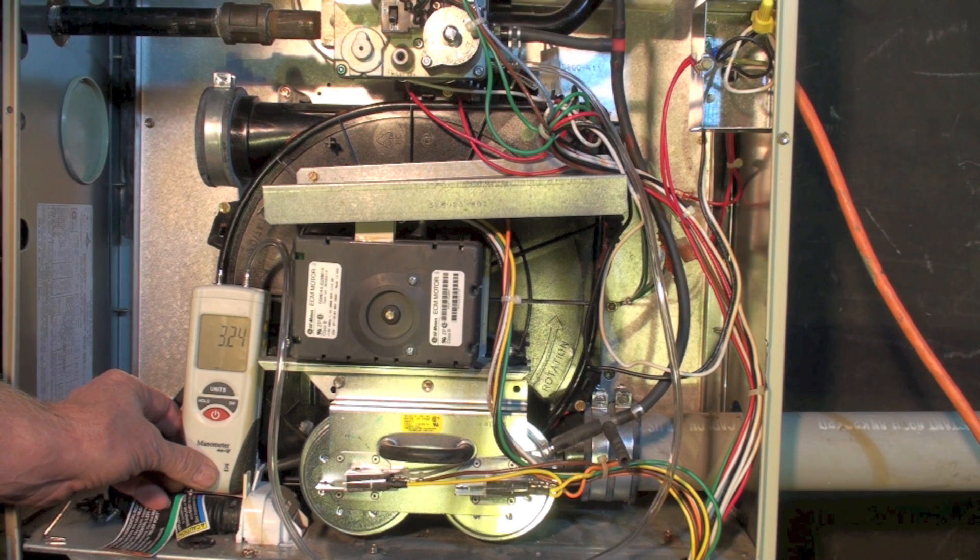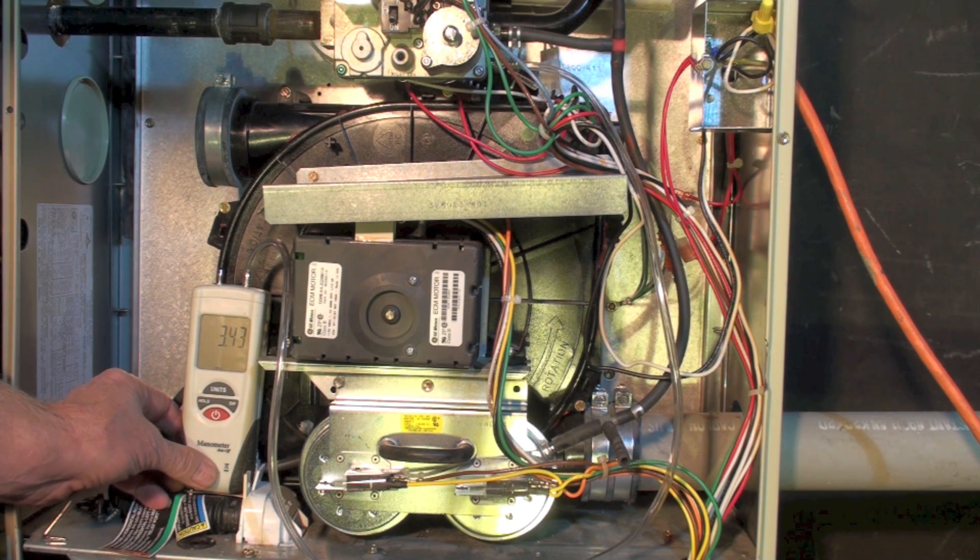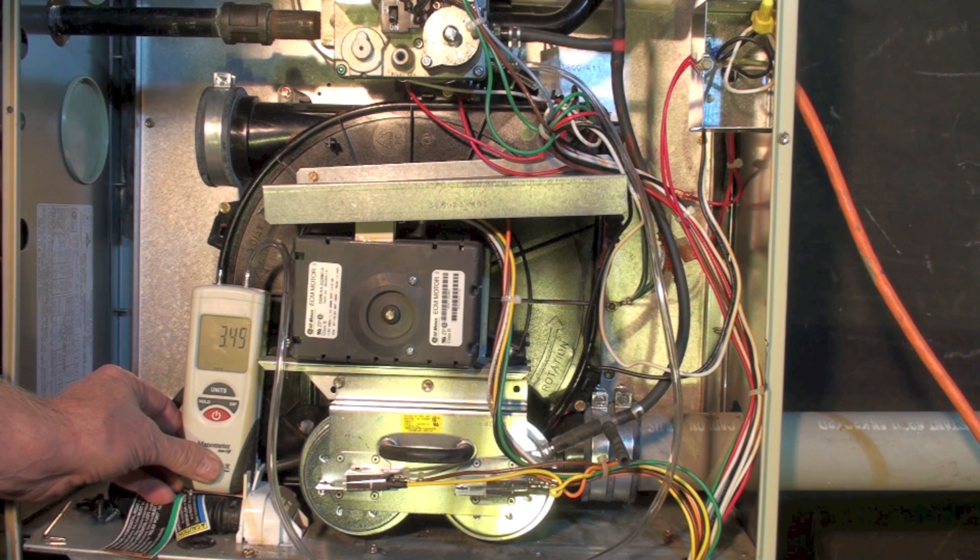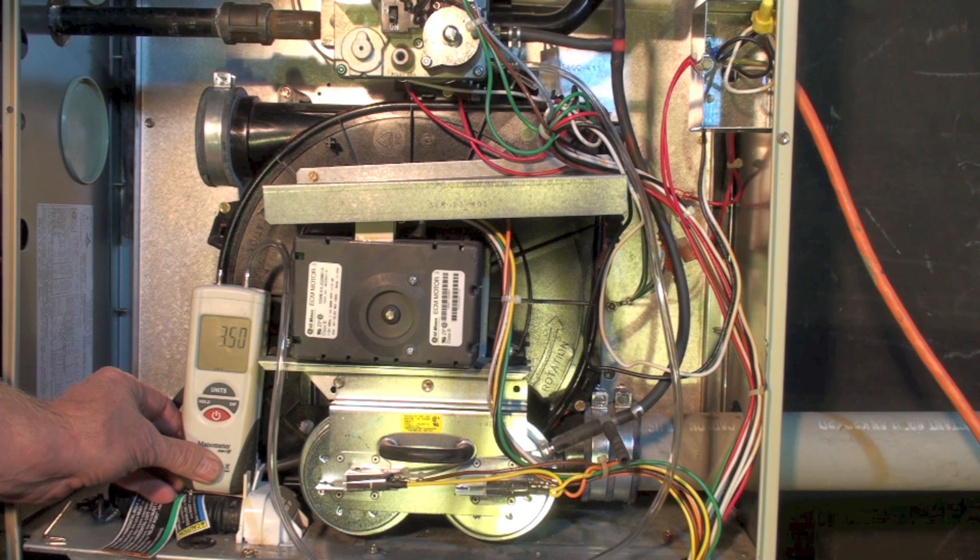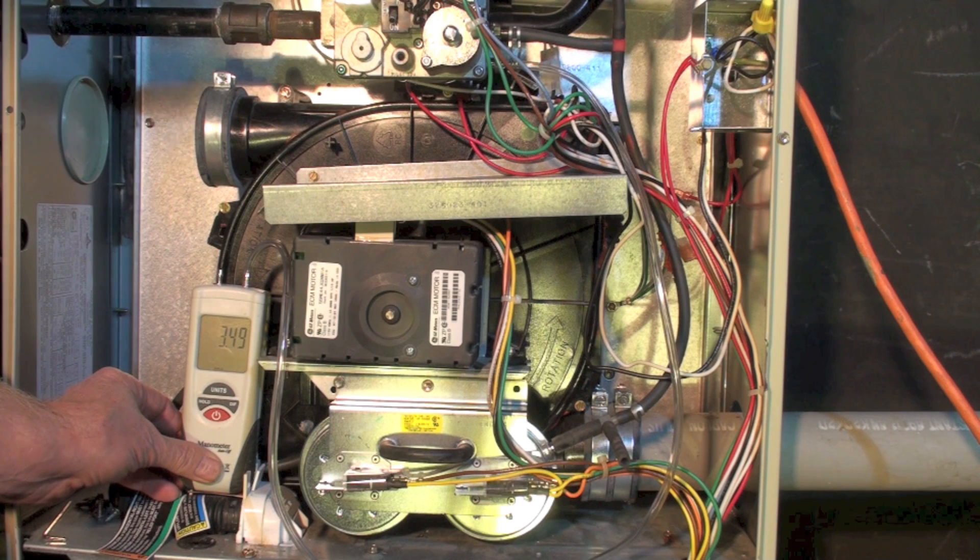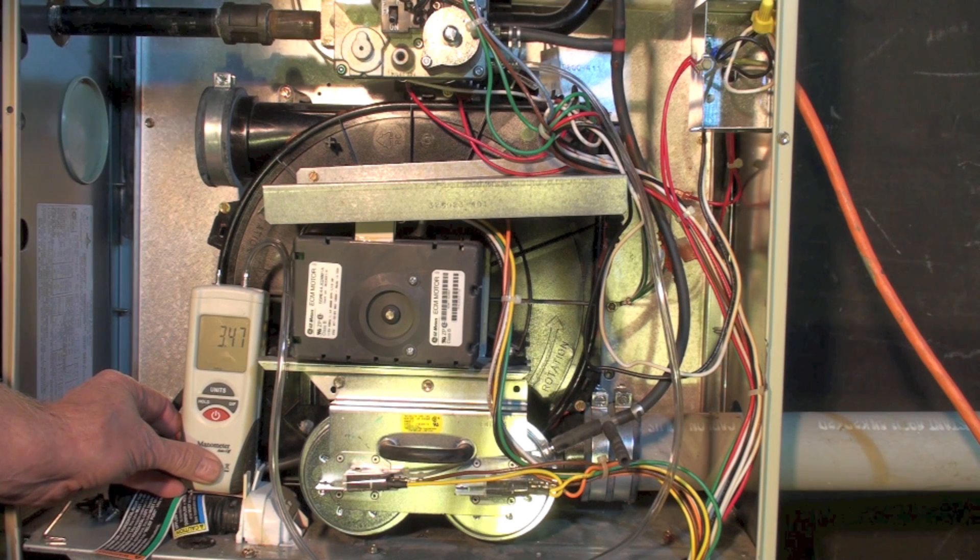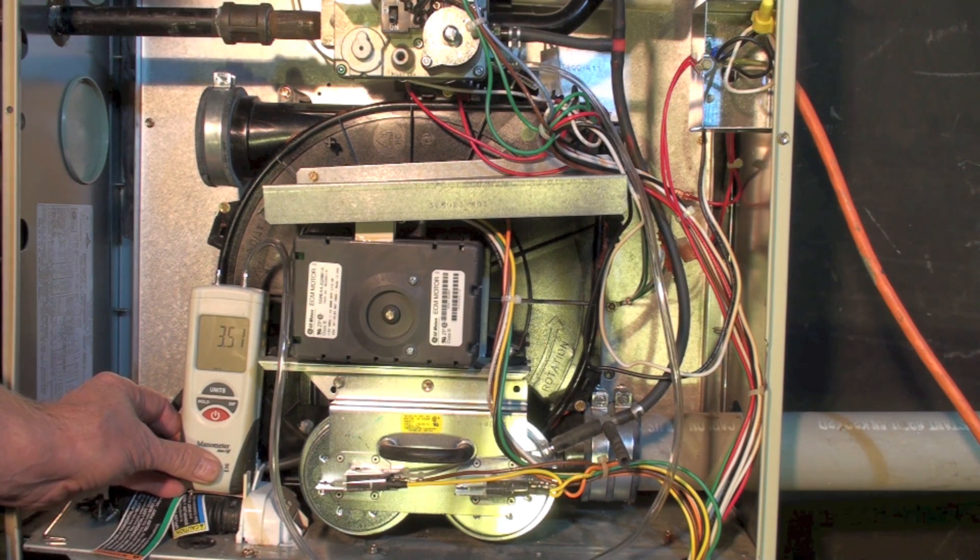Now you can see we're in high fire because we're coming up to that 3.5 inches of water column on the manometer. So the gas valve is switching to high fire. The fan goes to high speed so that you end up with about the same temperature of air coming out of the ductwork in both low and high fire.